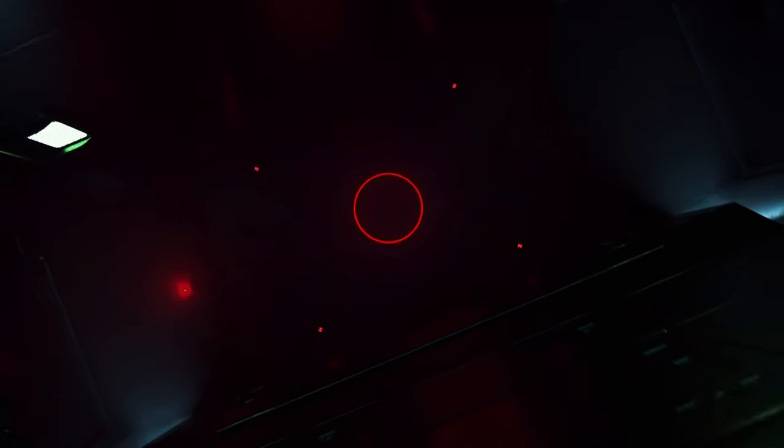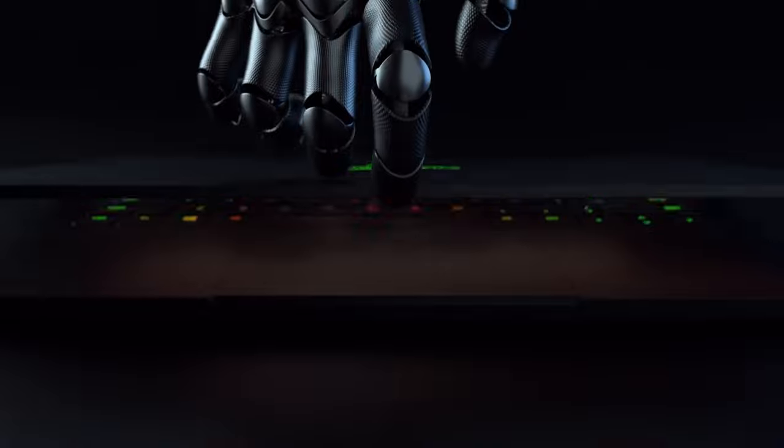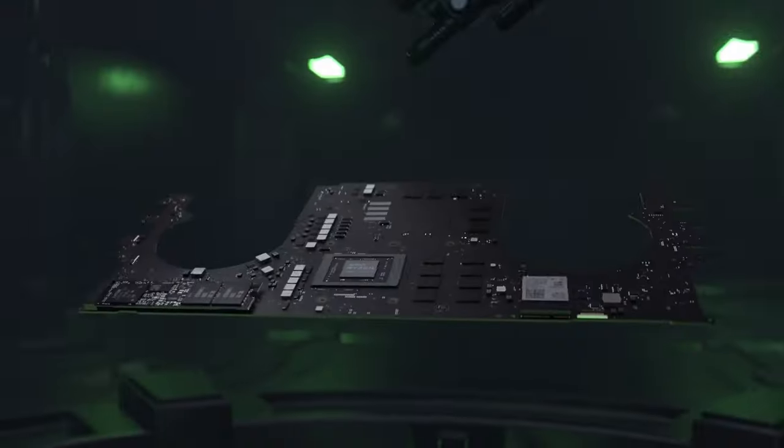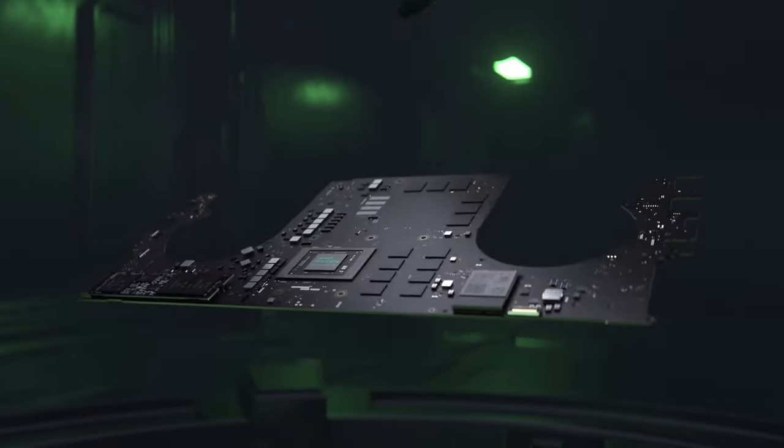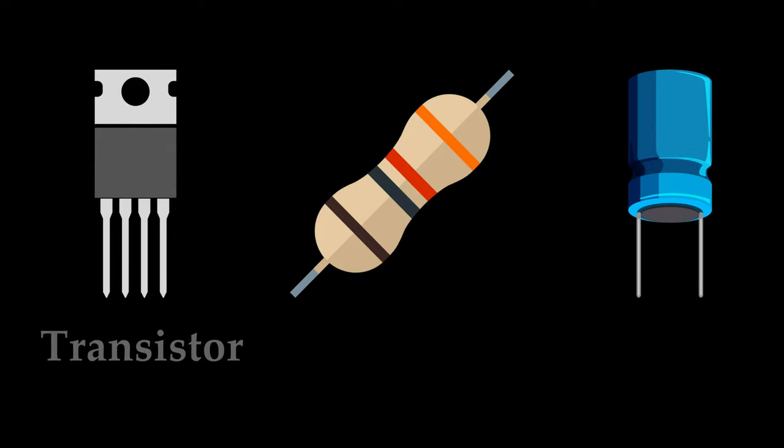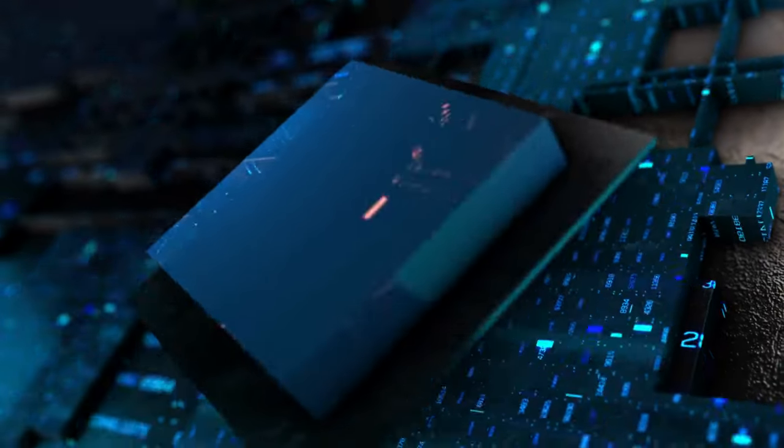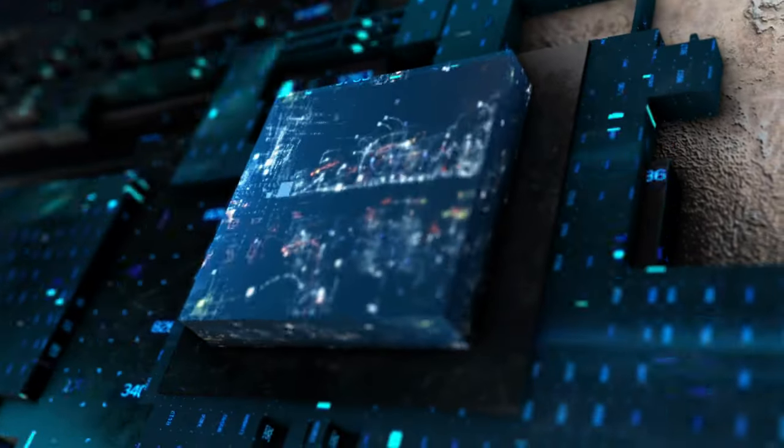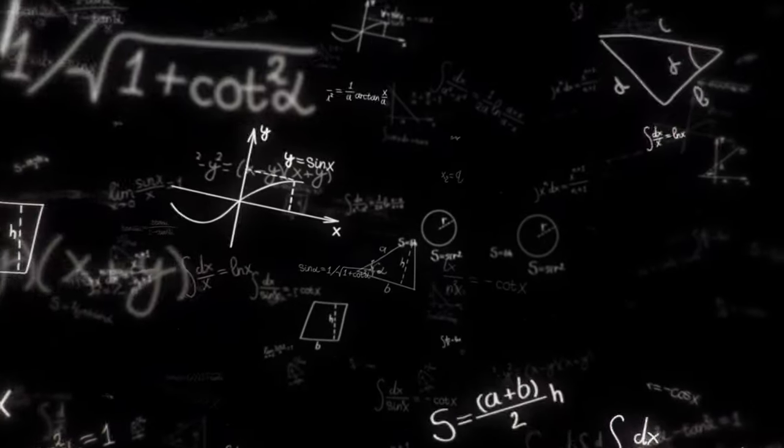To understand what a biocomputer is, we must first look at traditional computers. Traditional computers are built using electronic components such as transistors, resistors, and capacitors. These components are organized in complex circuits to perform various operations, such as arithmetic and logic functions.